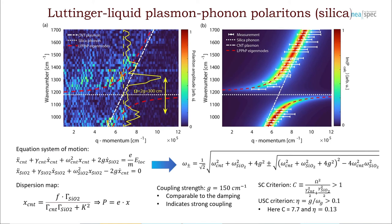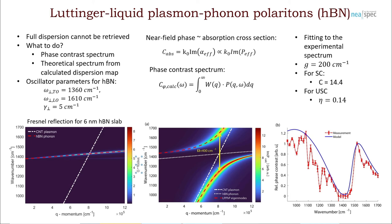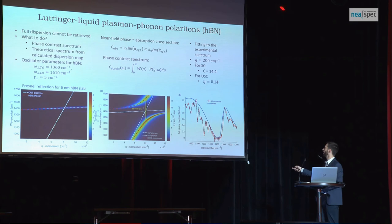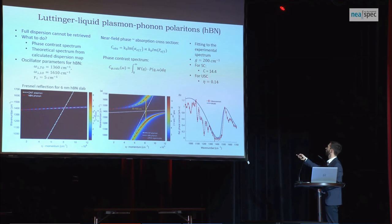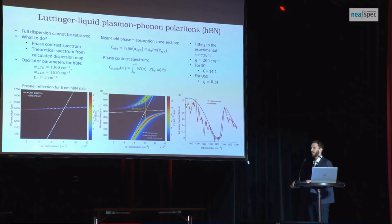We can now assess the coupling, and we found that by the criterion for strong coupling, we are well within the strong coupling regime, and we have also reached the ultra-strong coupling regime. For the hBN, the plasmon fringes cannot be seen as clearly, but we can derive the near-field phase spectrum theoretically and fit it to the real phase spectrum, obtaining a very nice match. The coupling strength is even higher for hBN, and the normalized coupling strength is even more deeply in the ultra-strong coupling regime.